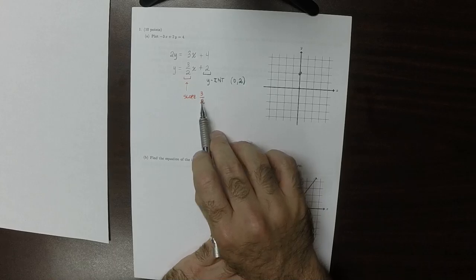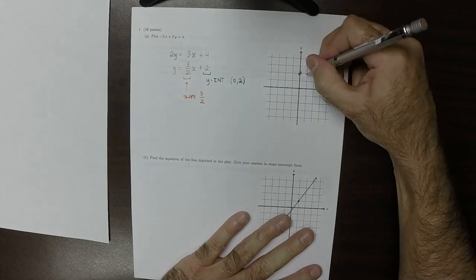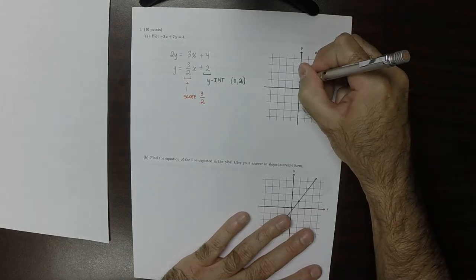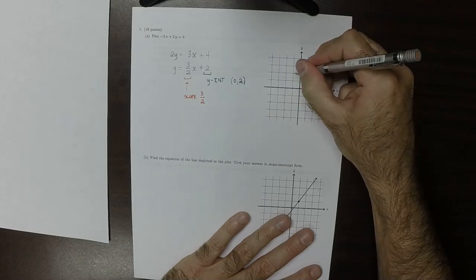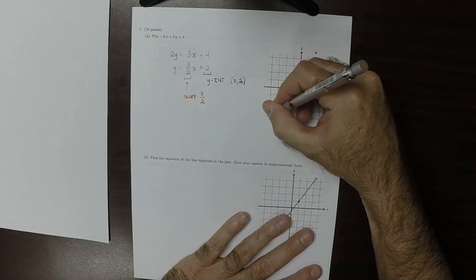So that means that every time we go to the right 2, we go up 3. So 1, 2, and then 1, 2, 3. And 1, 2, 1, 2, 3. 1, 2, 1, 2, 3. 1, 2, 1, 2, 3.